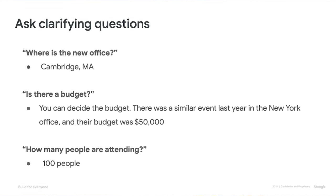Here are some clarifying questions Kelsey would ask: Where is the new Google office? Cambridge, Massachusetts. Is there a budget? You can decide the budget — there was a similar event in the New York City office last year and their budget was $50,000. And how many people are attending? 100 people. Kelsey took a moment before responding and asked really thoughtful clarifying questions. Now she's going to share some logical assumptions.